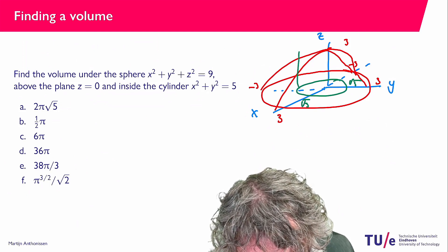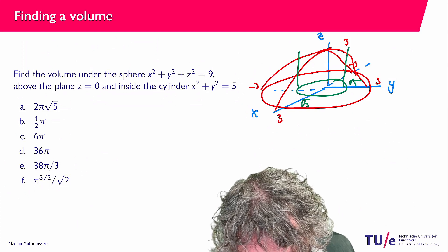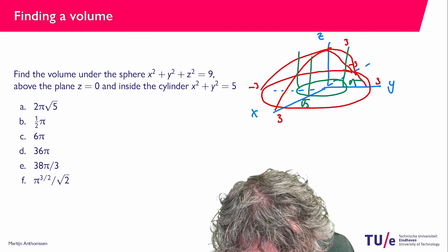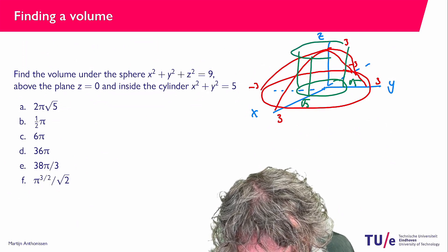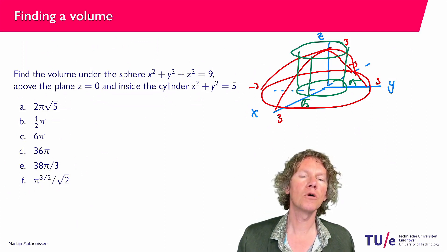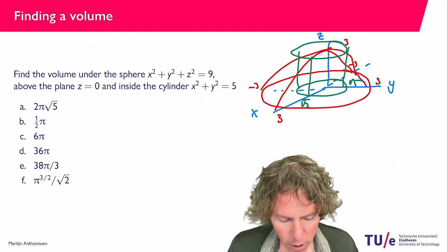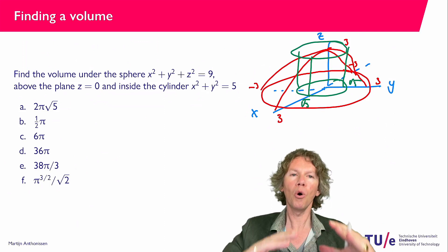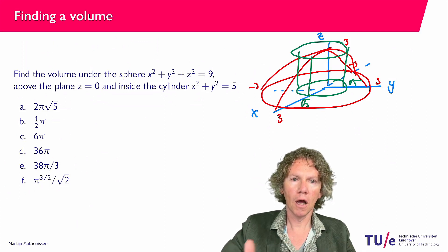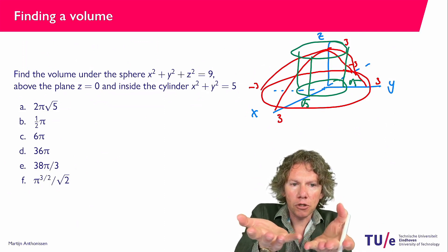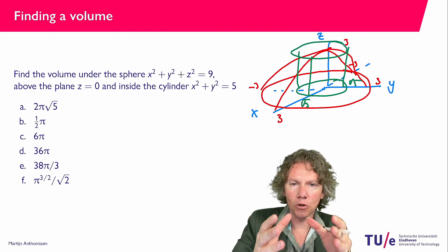And then we go up like this. So here I could also draw that circle. And basically what we want now is the area that is below the red surface, above the plane z equals 0 and inside the green cylinder.